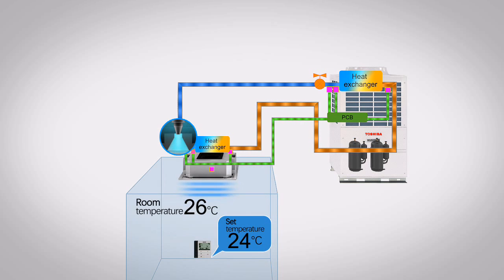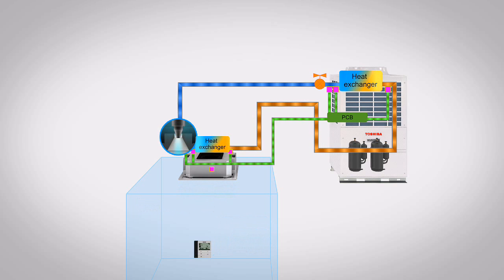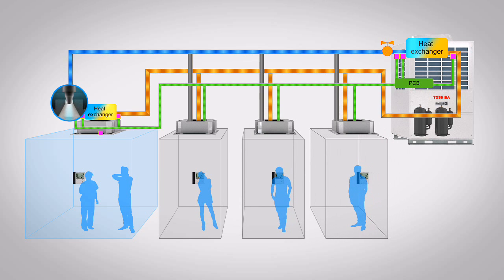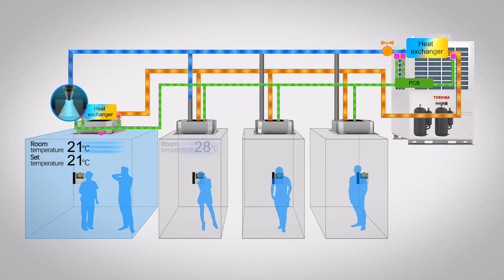As the number of indoor units within a system increases, so does the complexity of the control. To maximize energy efficiency, it is essential that each VRF system precisely identifies the optimal flow of refrigerant for each of the connected indoor units.